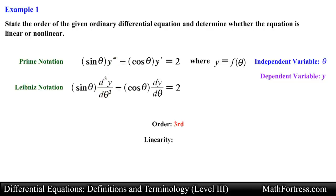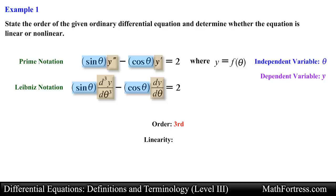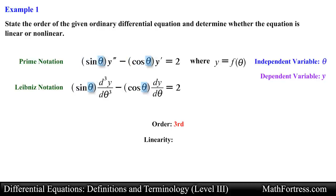Now let's classify the linearity of the ODE. We first need to make sure that the dependent variable and its derivatives are linear in form, meaning they are raised to the power of 1. Inspecting the derivatives, we see that both are raised to the power of 1. Next, the products of the dependent variable and its derivatives are solely expressed in terms of the independent variable — specifically as trigonometric functions, which are also transcendental functions written solely in terms of the independent variable theta. Since all three requirements check out, we classify this ODE as linear.